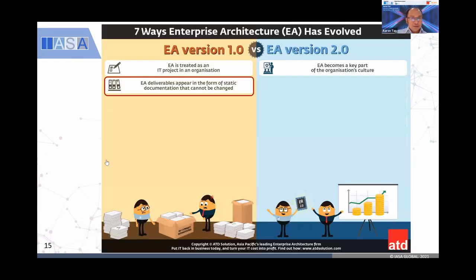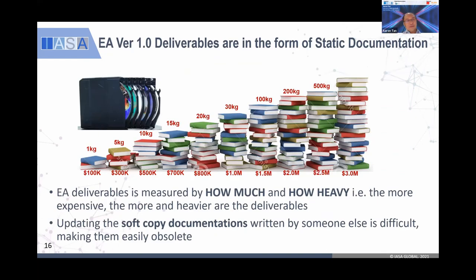The second difference between EA 1.0 and 2.0: EA deliverables appear in the form of static documentation that cannot be changed. In the traditional EA, I came across many organizations that told me: 'Aaron, I heard you are doing EA — can you help me translate from what the previous consultant delivered — a few boxes of all the architecture documentation they produced?'